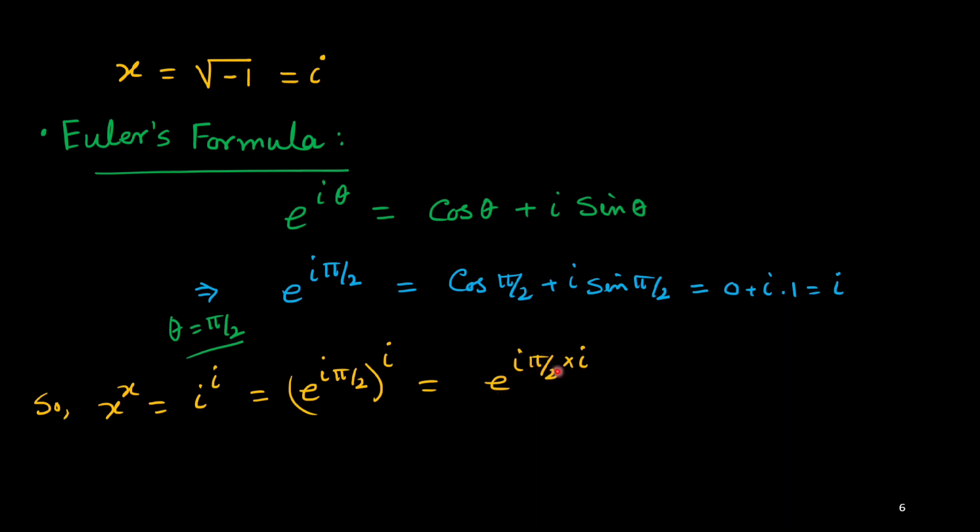Now, this i and i becomes i squared: e to the power i squared pi by 2. And i squared equals minus 1, thus e to the power minus pi by 2.